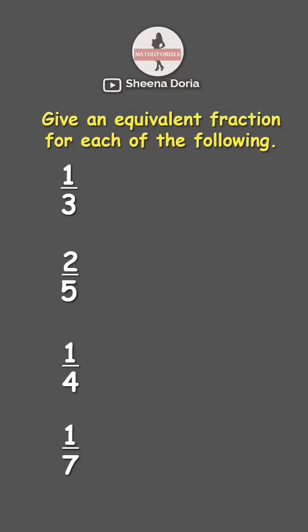Give an equivalent fraction for each of the following. To get an equivalent fraction of a fraction, you need to multiply both the numerator and the denominator by the same number. Any number will do.